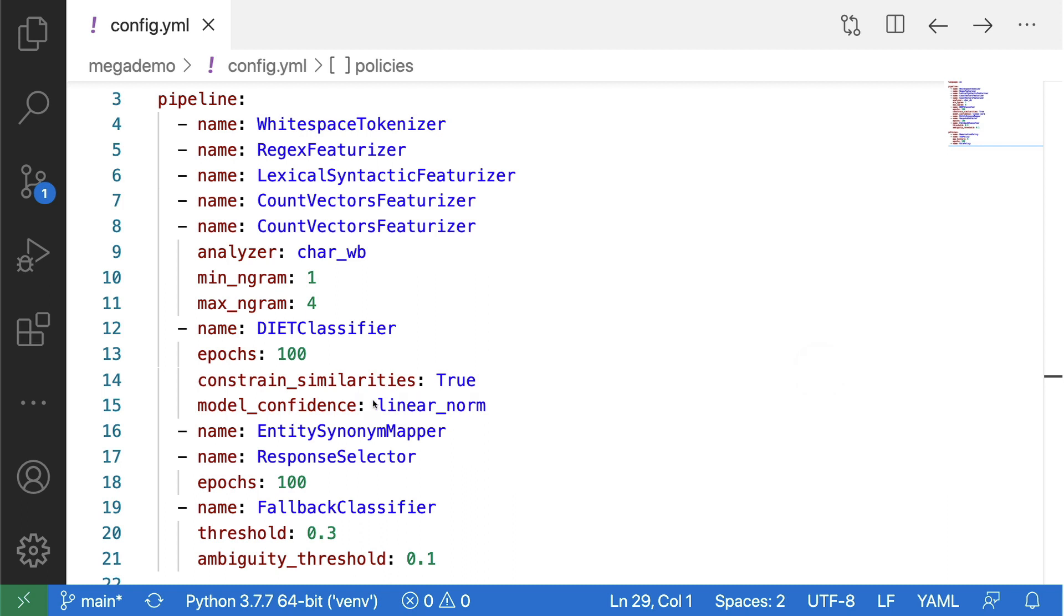If you are interested in trying out this new feature, what you can do is you can set the model confidence to linear norm. When you do this, you get this new confidence measure that should make it easier for you to find an appropriate threshold for the fallback classifier. You can find more information in the documentation itself, but it's good to also observe that these settings can also be configured for the TED policy as well as for the response selector. These algorithms all share a common implementation, so that means you can also experiment with these new confidence measurements for these two components as well.